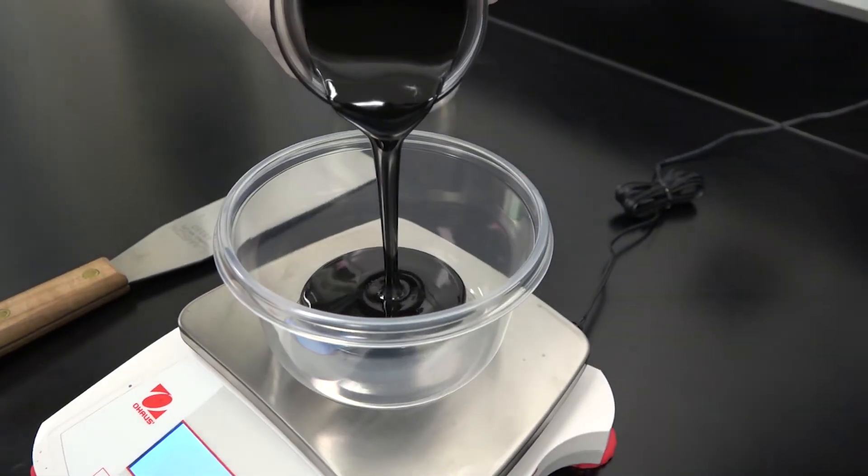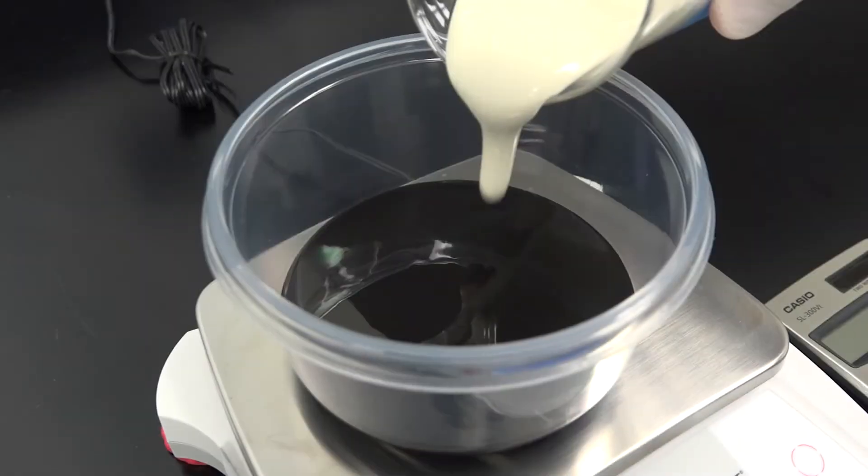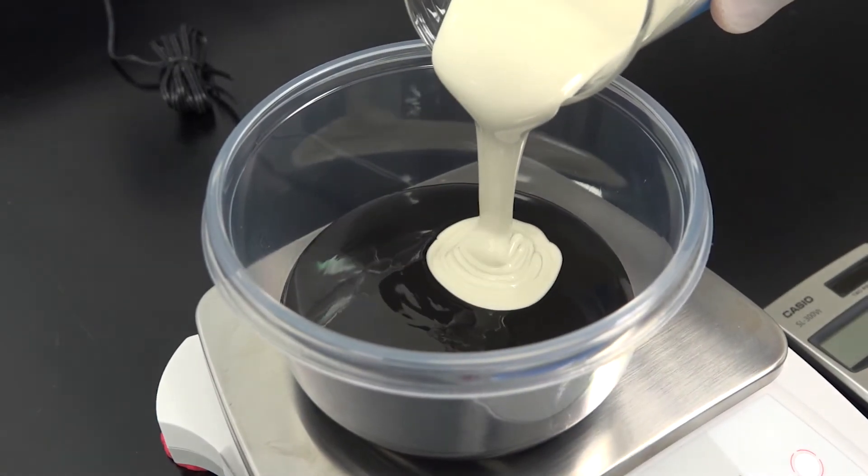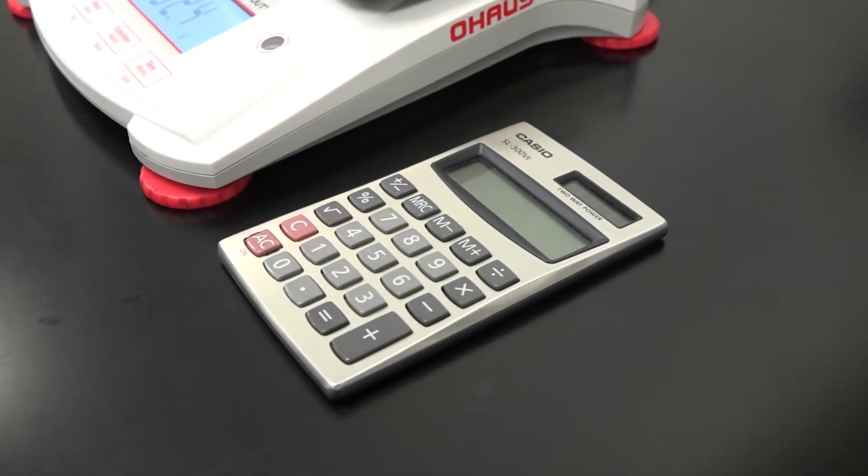Now add part A first and note the weight. Next, add the appropriate amount of part B to the part A. Use a calculator if necessary to determine the correct amount.